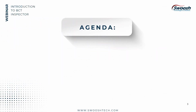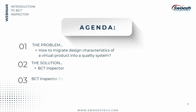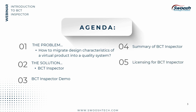Here's our agenda for today's webinar. We need to solve the problem of how to migrate design characteristics of a virtual product into a quality system. We'll look at a typical workflow process for ballooning prints, developing inspection reports, and how revisions are dealt with. We'll introduce the solution BCT Inspector, demonstrate its capabilities, summarize the benefits, and look at different licensing options.